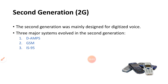We will now discuss the second generation of cellular telephony. In the previous video lecture we discussed the first generation, which used analog signals for voice communication. Here in the second generation, we use digital signals for voice communication. The second generation was mainly designed for digitalized voice, using digital signals for voice communication.